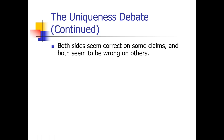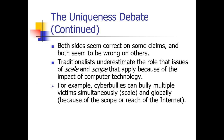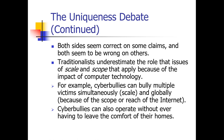Both sides seem correct for some of their claims, though they're not always correct on everything. Traditionalists underestimate the role, scale, and scope that technology has had. Cyber bullies can target multiple victims simultaneously at a large scale. You can now bully people globally, you can bully people 24/7 — as opposed to pre-internet, where bullying kind of stopped when you left school or left the bus. Now with social media, it's constant. Cyber bullies can also operate without ever leaving the comfort of their home. It takes very little effort to bully now.